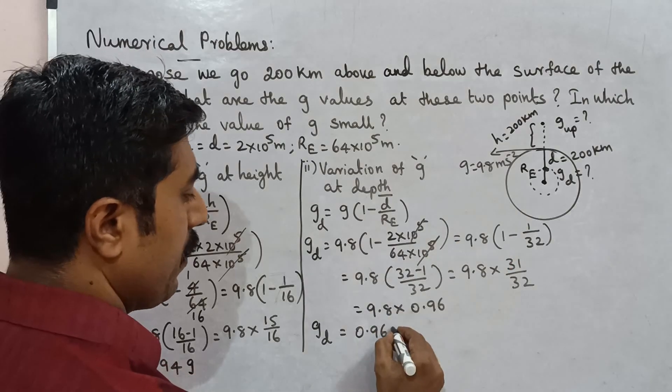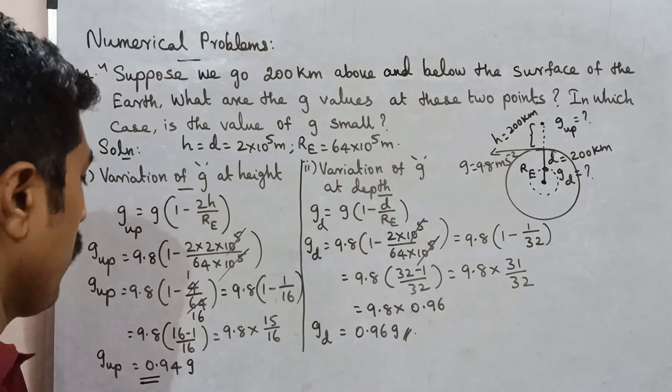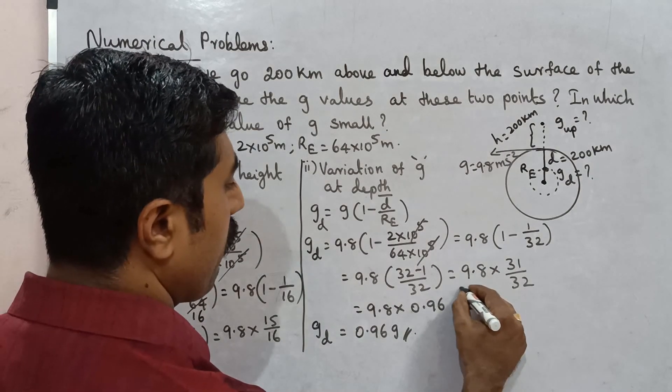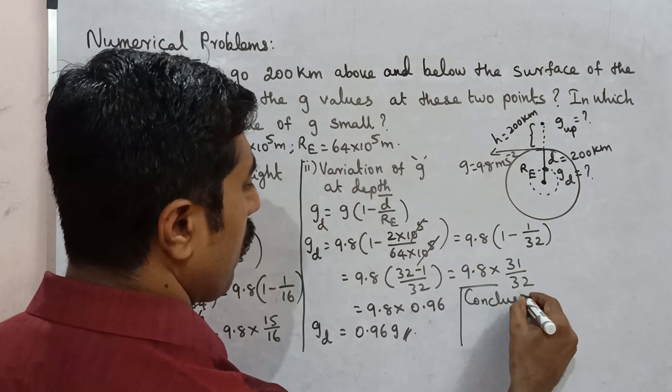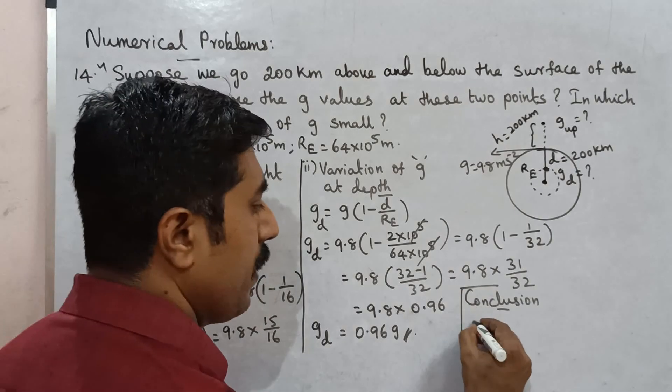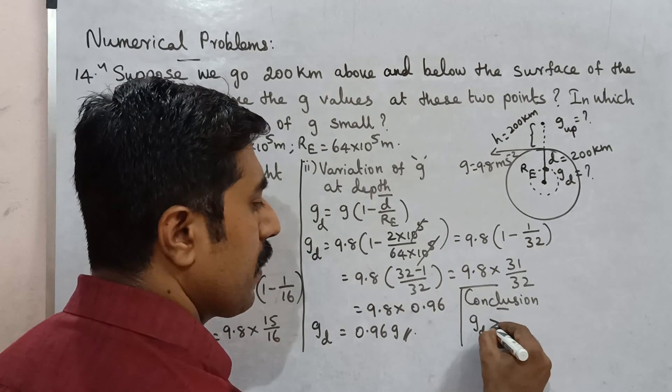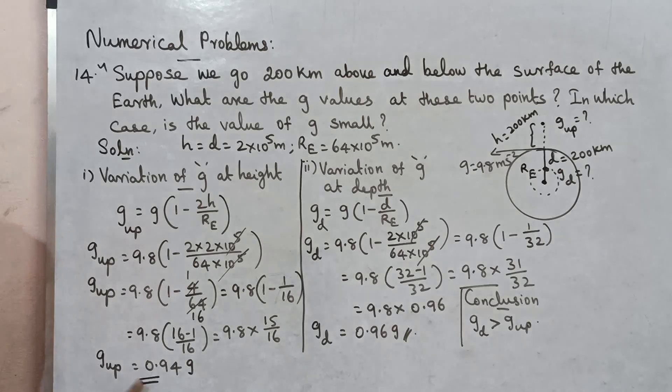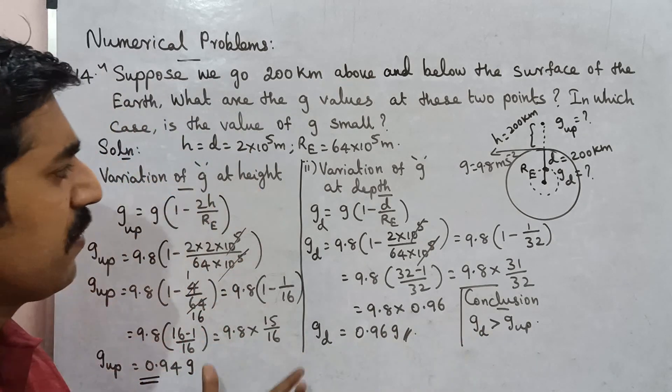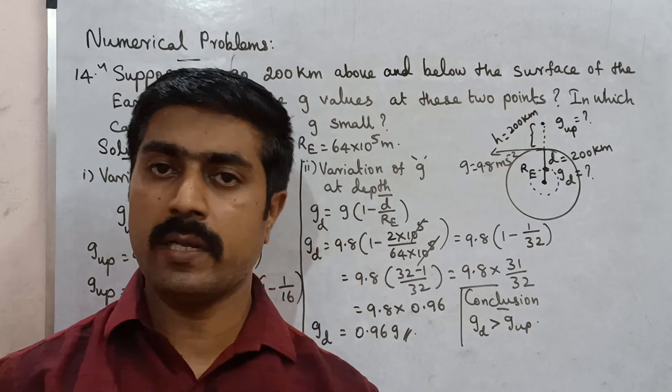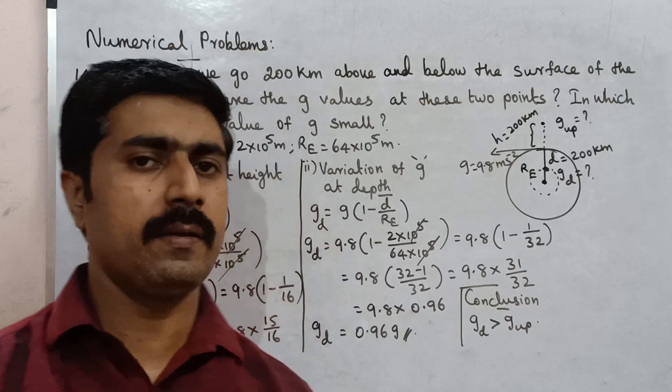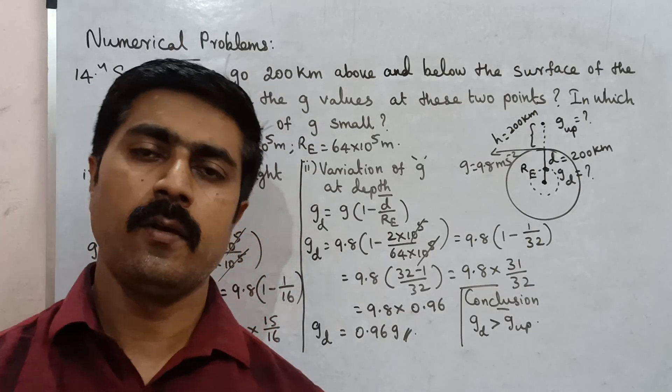So conclusion is: g down value is 0.96g, g up value is 0.94g. So you can do it with your friends. All the best.